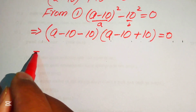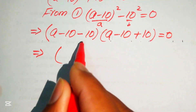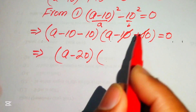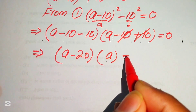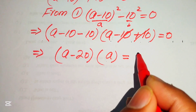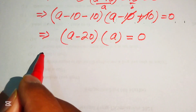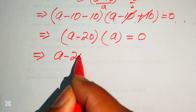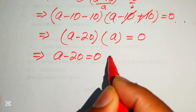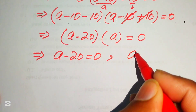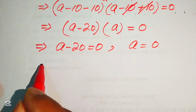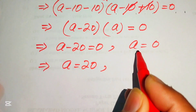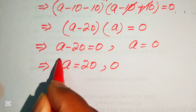In the first factor, minus 10 minus 10 equals minus 20, giving (a minus 20). In the second factor, the negative and positive 10 cancel, giving just a. So we split into two cases: a minus 20 equals 0 giving a equals 20, and a equals 0. These are the two roots from equation number 1.